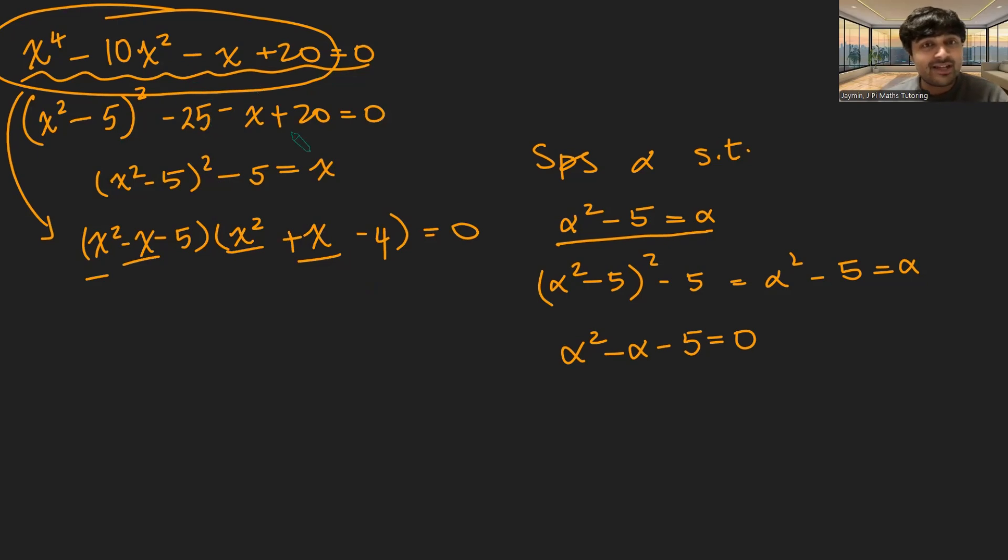And this is great, because now I'm trying to find the values of x. I can just solve this quadratic and this quadratic separately. Using the quadratic formula here, I get x is 1 plus or minus root 21 over 2. And using the quadratic formula over here, I get x is minus 1 plus or minus root 17 all over 2. And those give me my four solutions to this quartic.